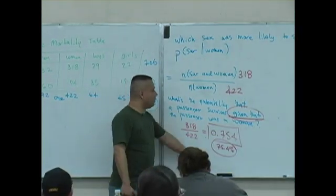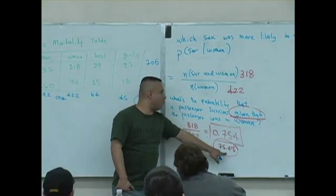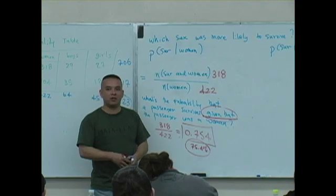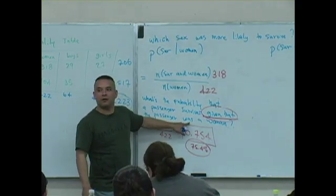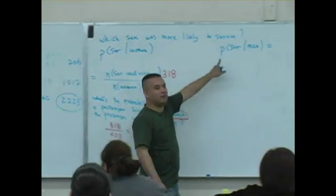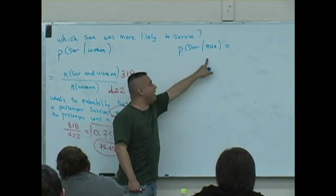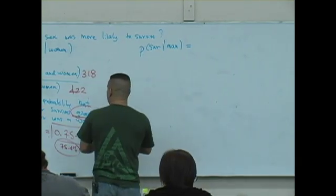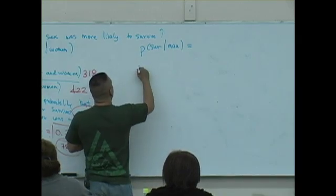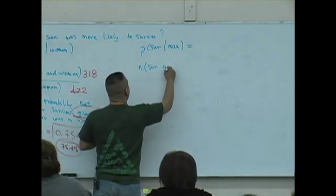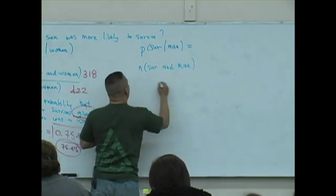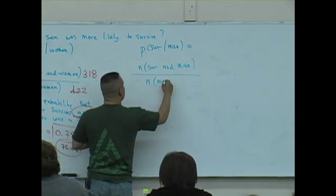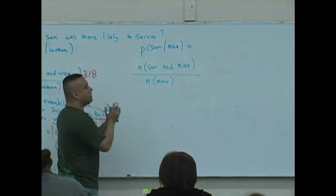So 75.4 percent of the women survived, and this is important information. Let's compare now the probability, or the percent, of men who survive. The definition is going to be n of survive and man - meaning you're a man who survived - divided by n of what? Good. So now you're considering just the men, not passengers.